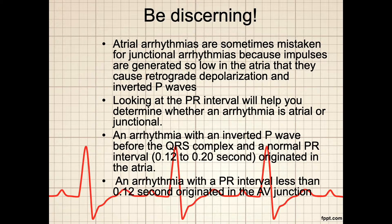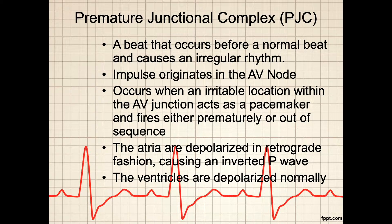An arrhythmia with an inverted P wave before the QRS complex and a normal PR interval actually originated in the atria. On the other hand, an arrhythmia with a PR interval of less than 0.12 seconds originated in the AV junction. Let's look at one of those rhythms — a PJC, or premature junctional complex. This is a beat that occurs before a normal beat and causes an irregular rhythm. The impulse originates in the AV node when an irritable location within the AV junction fires prematurely or out of sequence. The atria are depolarized in retrograde fashion, causing an inverted P wave; however, because the impulses travel down proper pathways, the ventricles are depolarized normally, producing a narrow, normal-looking QRS complex.